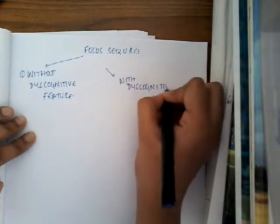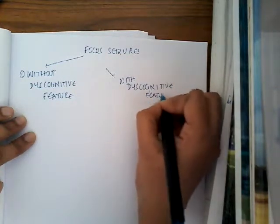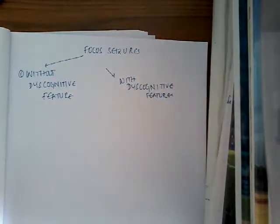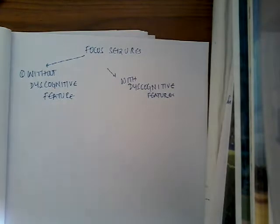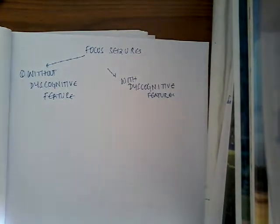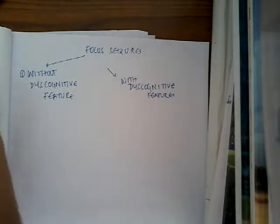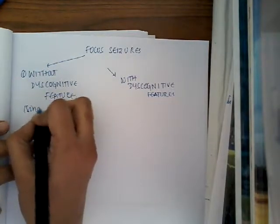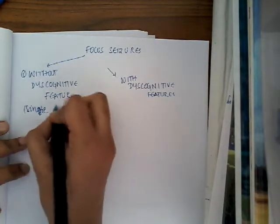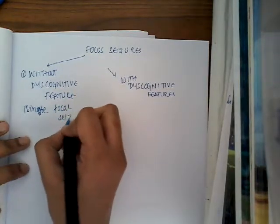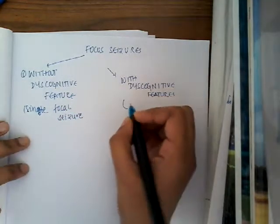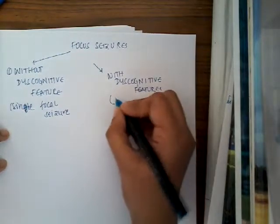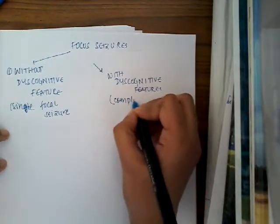What are discognitive features? Previously, focal seizures were divided into two types called simple focal seizures and complex focal seizures. But now simple focal seizures have been renamed as 'without discognitive feature' seizures, and complex focal seizures are now called focal seizures with discognitive features.